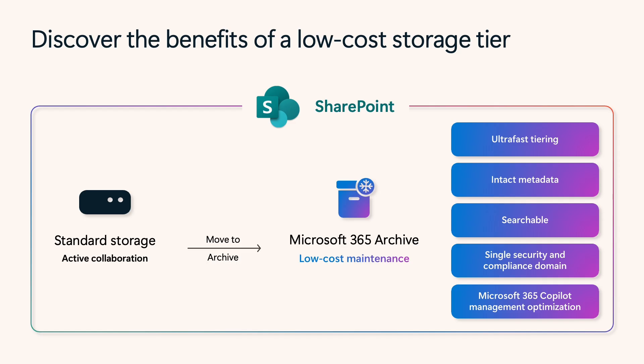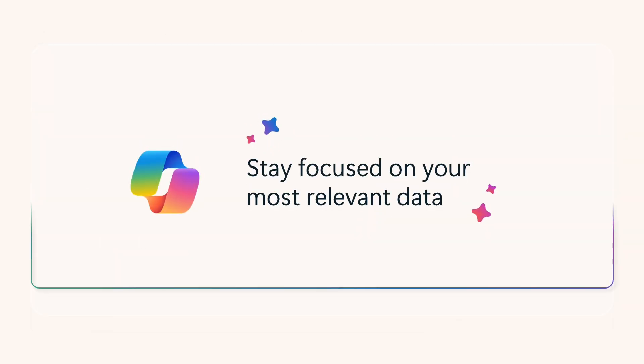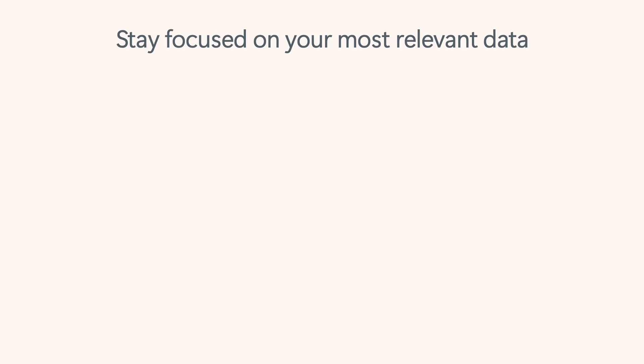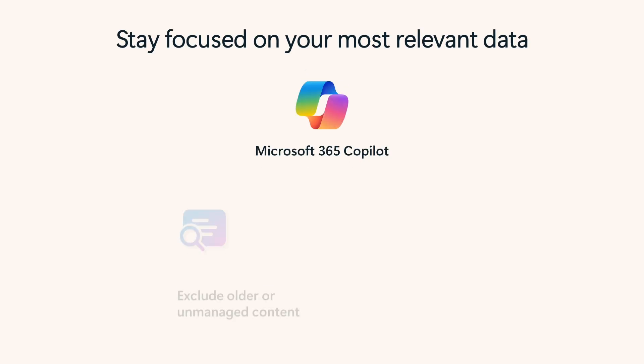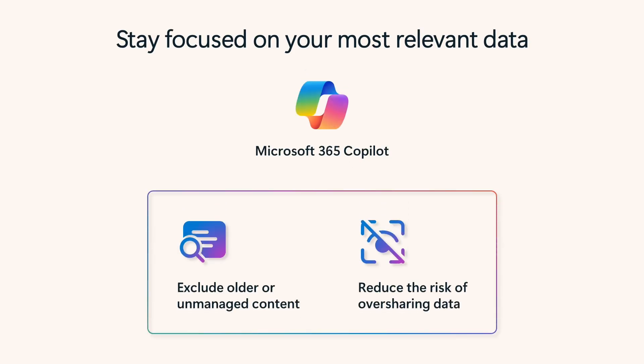Whether active or archived, your data stays within Microsoft 365's trust boundary, avoiding the need for multiple storage systems. Archive also removes inactive data from Copilot's index, which prevents oversharing and helps Copilot reference only your most recent and relevant information.